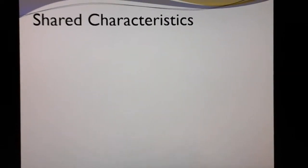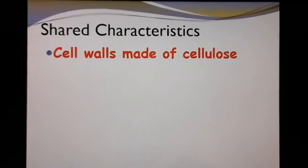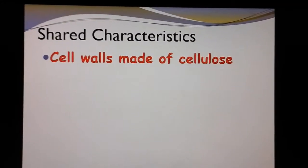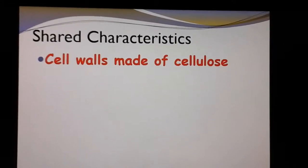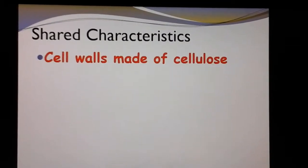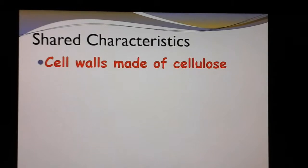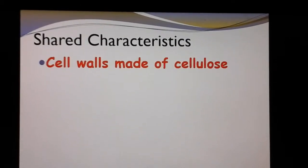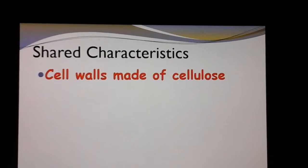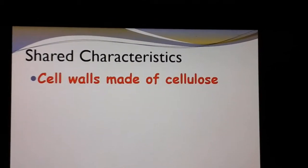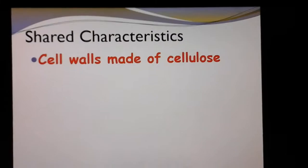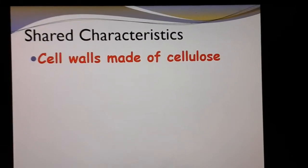Shared characteristics with green algae: they all have cell walls made of cellulose. Cellulose is a sugar — O-S-E at the end of a word means it's a sugar. Cellulose is basically like the bones of a plant. You've all eaten celery — you peel off those strings, chew them and chew them, and they don't go away. That's because the skin of celery is almost pure cellulose. It's strong, it's tough, it helps plants stand up. Since we don't have an appendix, we can't break down cellulose. Brown algae and red algae don't have cellulose in their cell walls, but green algae does.